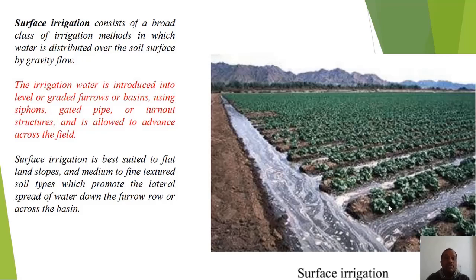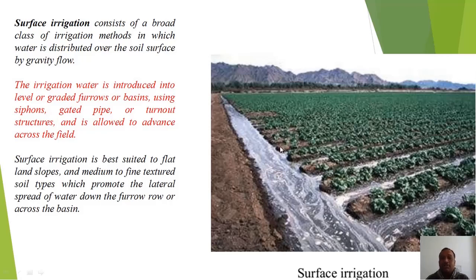In surface irrigation, gated pipe or turnout structures are used, and water is allowed to advance across the field surface. It is best suited to flat land slopes and medium to fine textured soil types, which promote the lateral spread of water down the furrow row or across the basin. However, there can be some wastage of water.